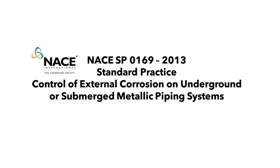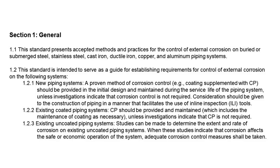Now let's go to the general part. Section 1.1: This standard presents accepted methods and practices for the control of external corrosion on buried or submerged steel, stainless steel, cast iron, ductile iron, copper, and aluminum piping systems. External corrosion refers to the damage or degradation that occurs on the surface of the pipe exposed to the environment, which can ultimately weaken the pipe and lead to leaks, ruptures, or failures.